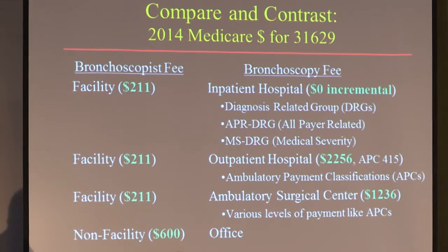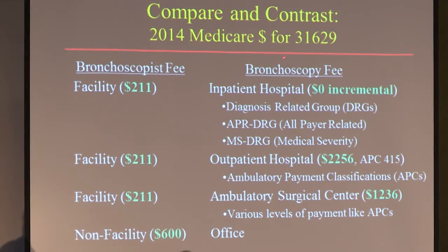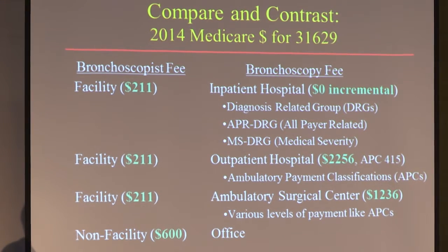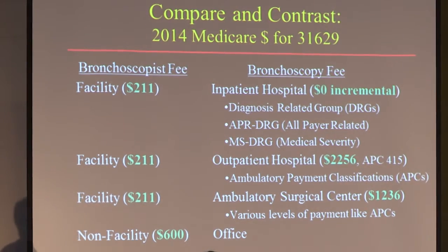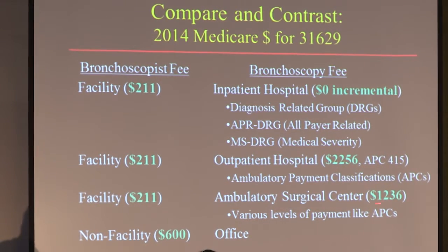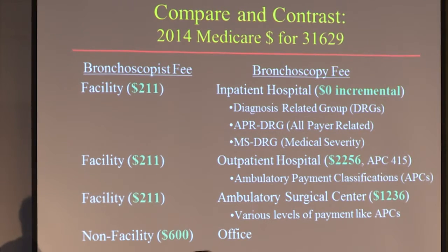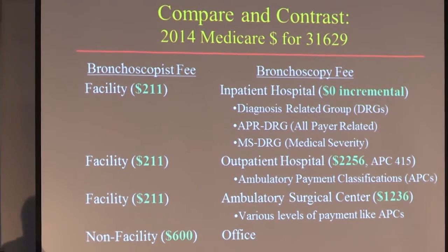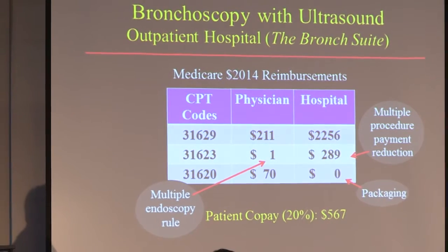For a transbronchial needle aspirate, there are a few being done in offices — or at least being reported to Medicare as done in offices. The hospital still gets $0 incremental reimbursement for inpatient. But in the higher-paying APC 415, the hospital outpatient rate is $2,256. There are two APCs for bronchoscopy currently: a low one paying $1,000 and a high one paying $2,256. In the ambulatory surgery center you'd get $1,236. As the bronchoscopist you get $211 in all of these settings, except if doing it in your office you get $600 — almost three times the reimbursement — because you own the bronchoscope, buy the transbronchial needle, and pay for all the staff.